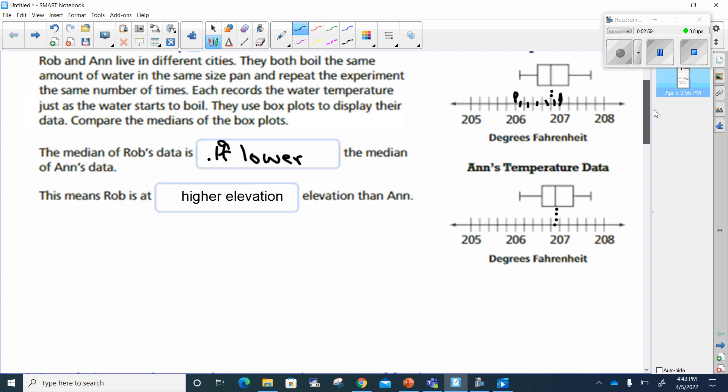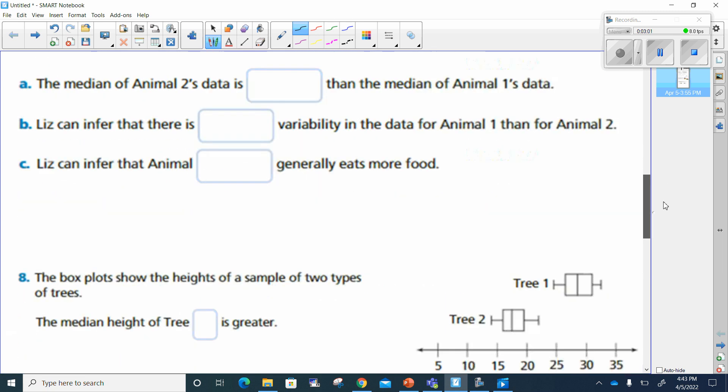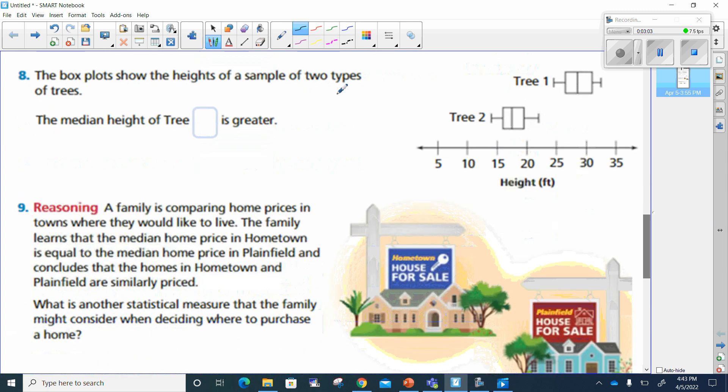Let's move on to number, well, you got number seven to do. I'm going to do number eight. It says the box plot shows the height of a sample of two types of trees. Okay, tree number one and tree number two. The median height of tree blank is greater.